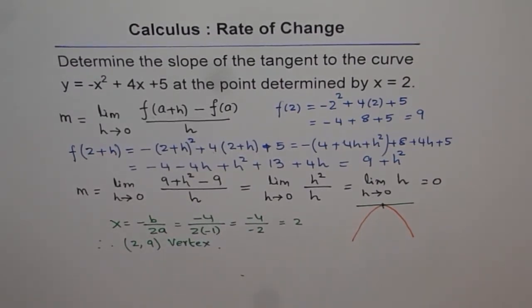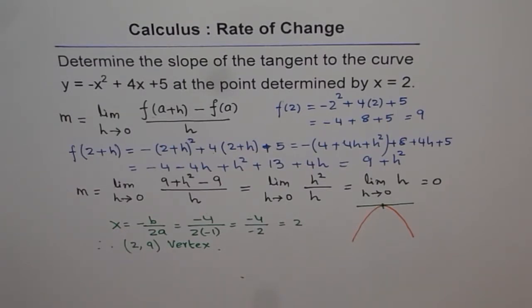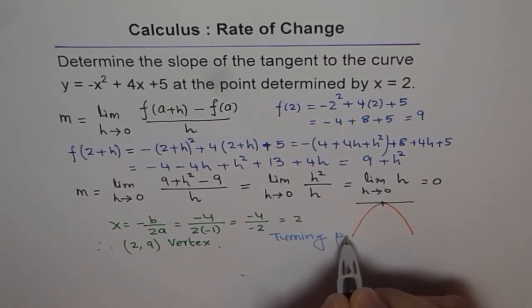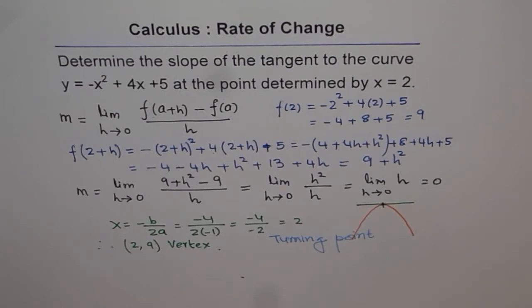I'm showing you this because we can have this question in different ways: determine the vertex of the given curve. In that case, you need to find the slope, equate it to 0, and find the value of a. That's working backwards. The third question could be: how do you interpret your answer? A parabola will have slope 0 only at a turning point.